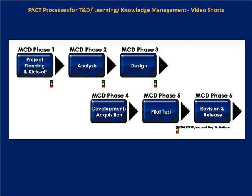The six phases of the modular curriculum development project are shown in the next graphic. Project planning starts off, and then an analysis of the target audience and the performance requirements, the enabling knowledge and skill requirements, and the existing training content. That would all then be used in a systematic design, then developed or acquired as appropriate, thoroughly pilot tested, and updated before it's generally released.